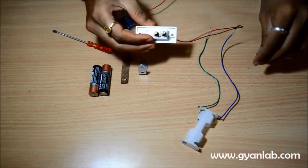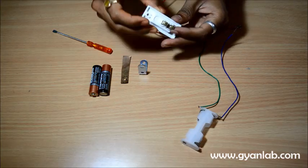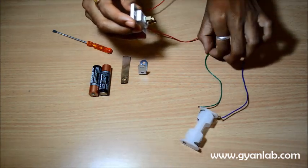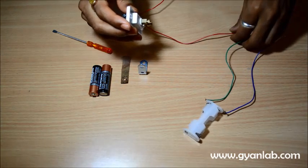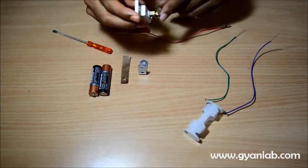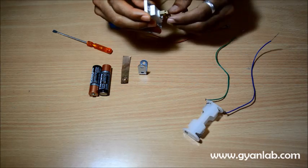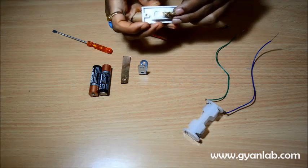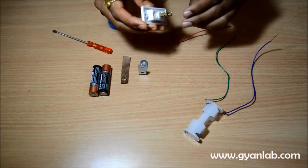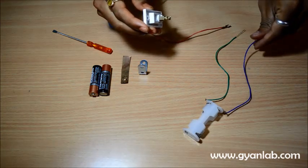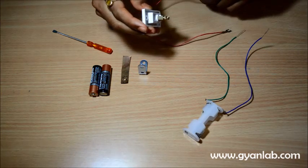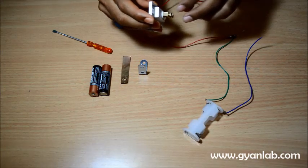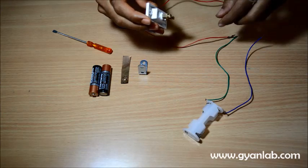I will connect the negative end of the battery holder which is this green wire and one of the ends of the bulb to the lower screw that you can see at the switch. And the positive end of the bulb holder along with the second connecting wire will go at the higher screw of the switch. Let's quickly do this.